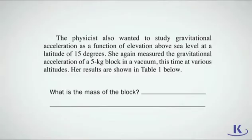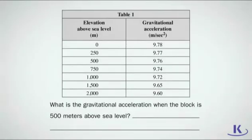Remember, to get the answer right, you have to find information from the passage as well as the figures. What is the mass of the block that the physicist is testing? Great, the physicist is testing a 5 kilogram block. What's the gravitational acceleration when the block is 500 meters above sea level? That's right, it's 9.76 meters per second squared.